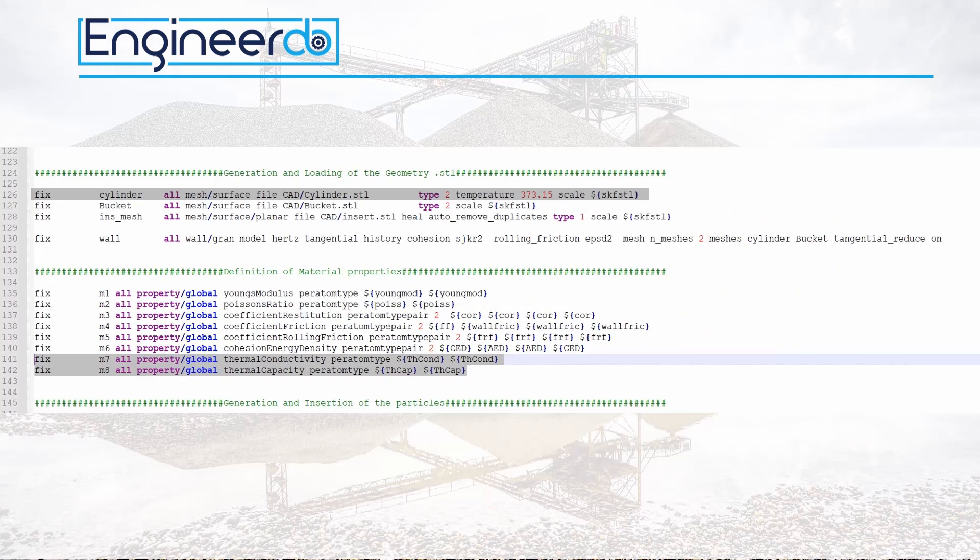In line 126 I define the cylinder which contains the sand to have a temperature of 373 Kelvin, which equals to 100 degrees Celsius the boiling point of water.